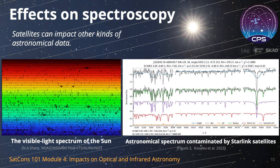Not all astronomical data takes the form of direct images of the cosmos. Scientists also study the spectrum of light. Certain instruments use optics to disperse the incoming white light into the colors of the rainbow. Dark or bright features superimposed on the rainbow tell us about the physical conditions in the universe. From these spectra, we can learn how fast objects are moving, what they're made of, and how hot or cold they are. Each spectrum is unique, like a human fingerprint.